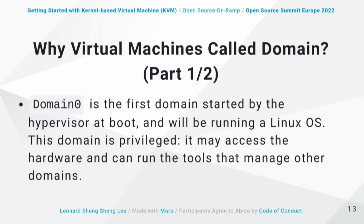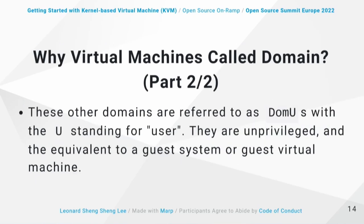Virtual machines are sometimes called domains, which has historical roots from Xen. Domain zero (dom0) is the first domain started by the hypervisor at boot, running the Linux OS. It has privileged access to hardware and can manage other domains. Other virtual machines are referred to as domain U (domU), where U stands for user — they are unprivileged and equivalent to guest virtual machines.